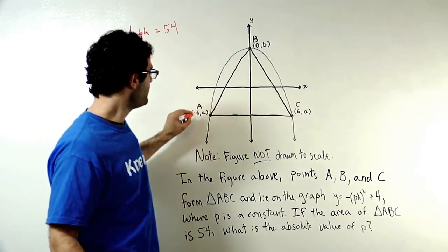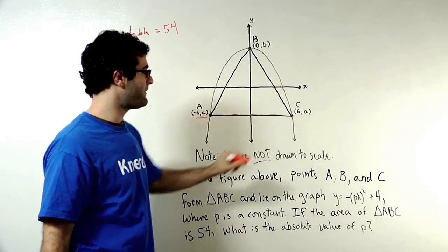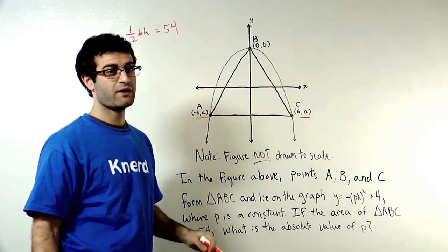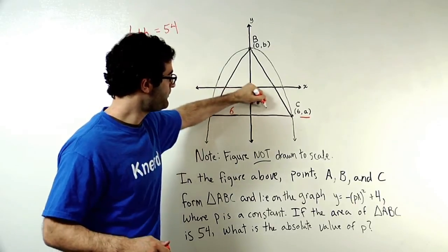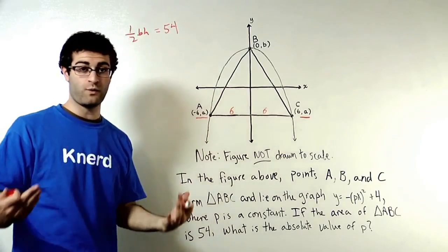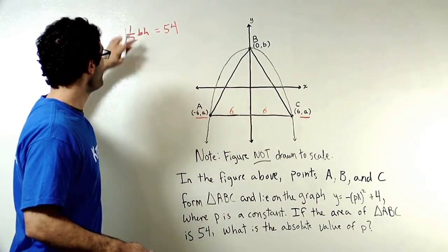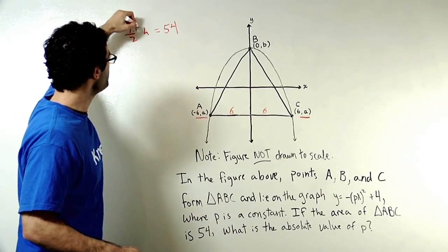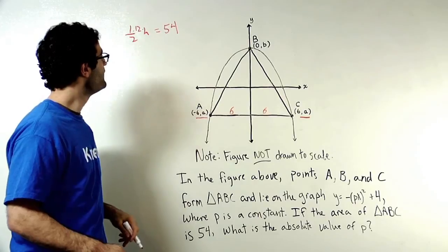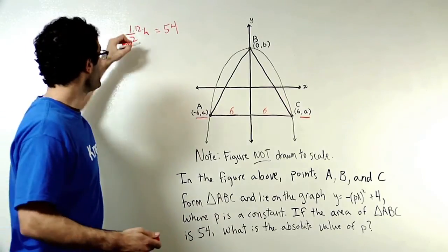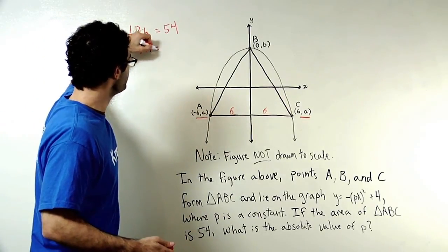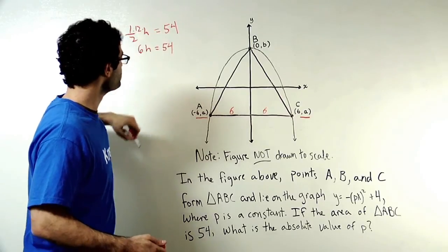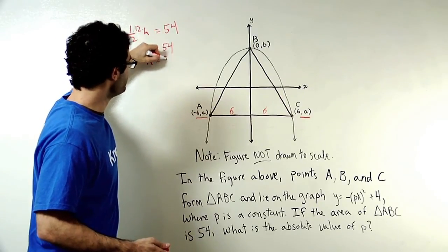We know that here we've got negative six comma A, and here we've got six comma A, which suggests that the base is six plus six units long, or 12. Instead of one-half times base times height, I can say that this is one-half times 12 times height. Now I know that the area of the triangle is 6H, which equals 54, and that H equals 9.